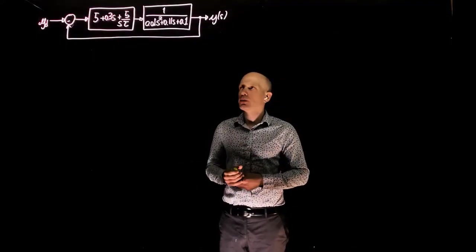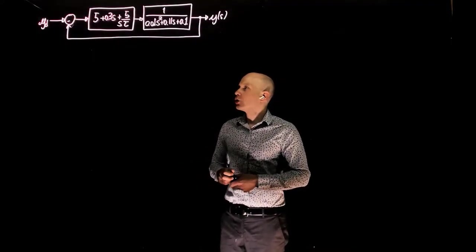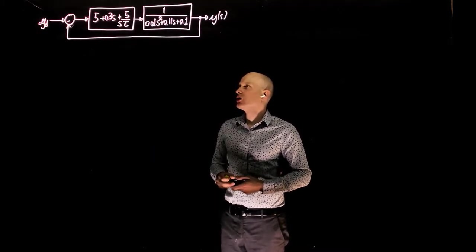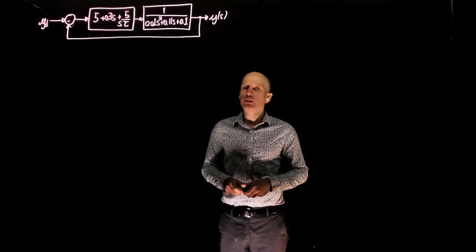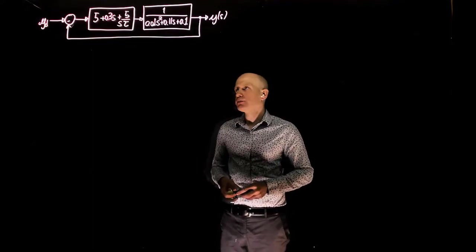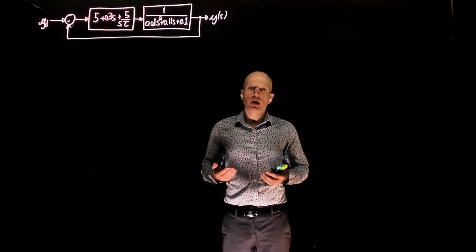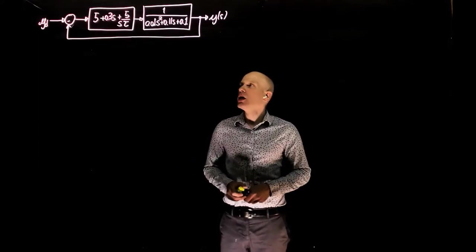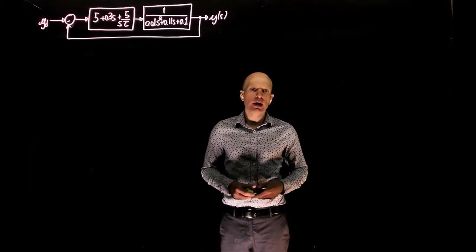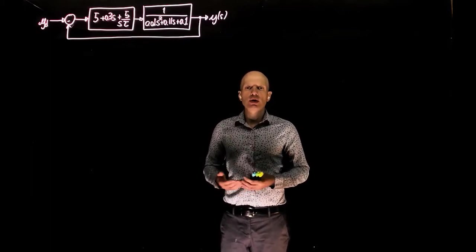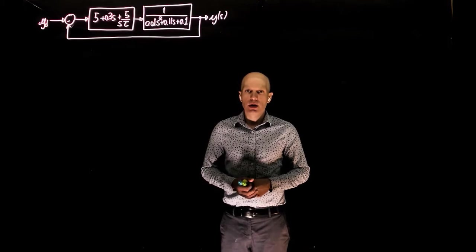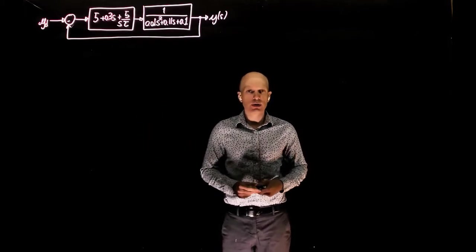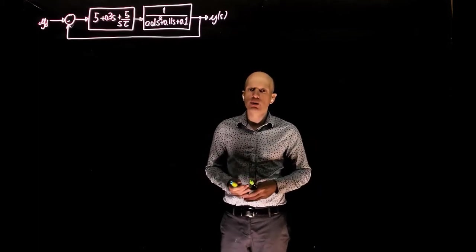In this example we have a plant controlled by a PID controller. The control gains are 5 for the proportional controller, 0.3 for the derivative controller, and 5 over tau for the integral controller gain. We want to determine the maximum value of tau that will lead to a system with complex conjugate dominant poles that have a damping ratio of no less than 0.7, using root locus analysis. To do this, we need to determine the characteristic equation of the closed loop system in standard form for root locus.